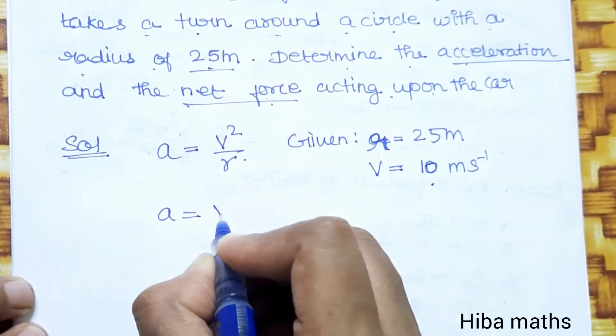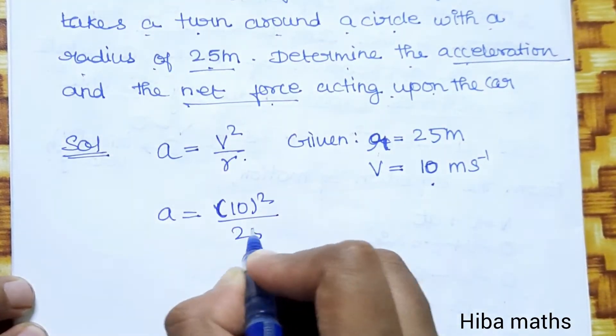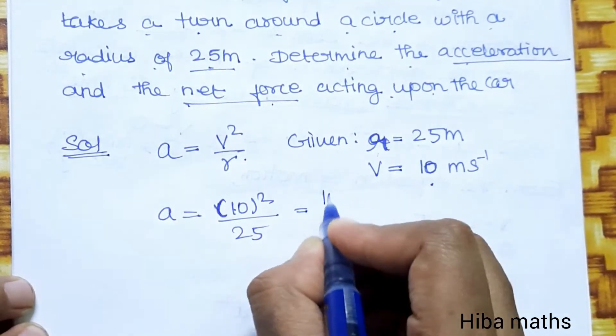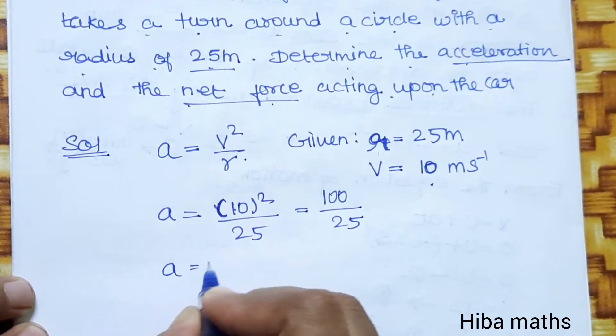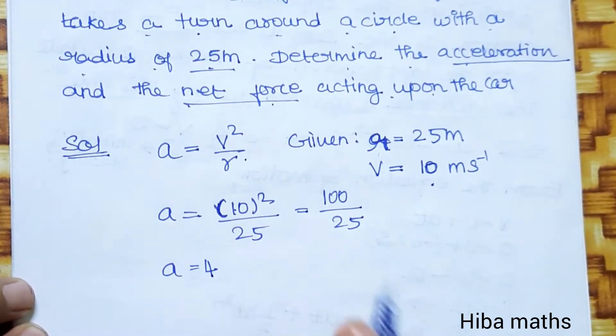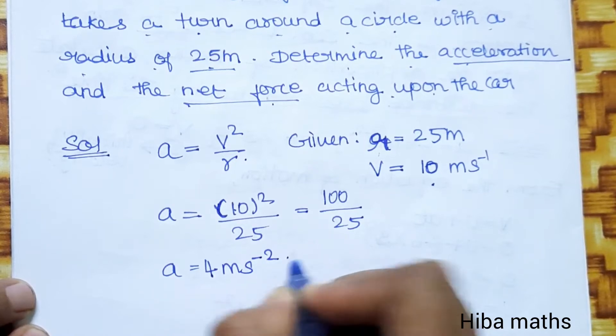a is equal to v², v is 10 divided by 25. 10 squared is 100 by 25, then the value is 4. 4 meters per second squared is the acceleration.